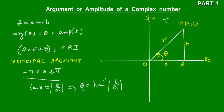From this we get theta equal to tan inverse of b by a. This is the argument of the complex number a plus ib when it lies in the first quadrant. Now let us discuss what happens if it lies in the second, third, or fourth quadrant — we shall discuss each one of the cases.